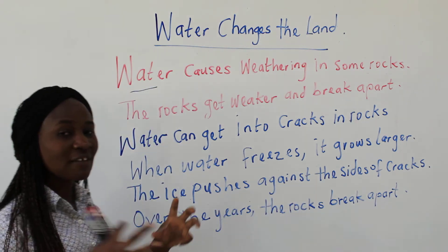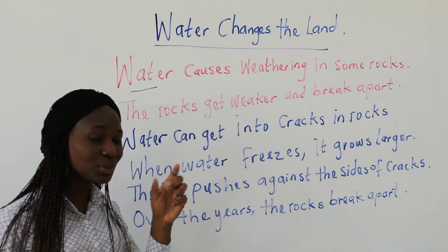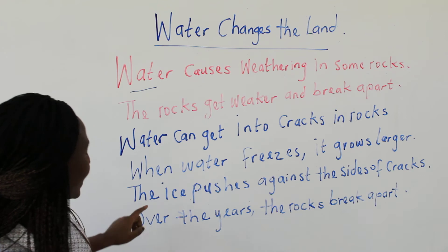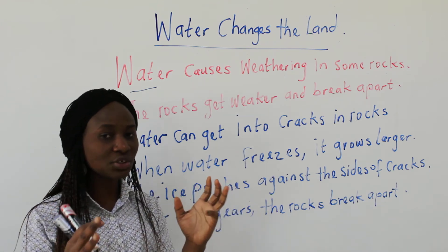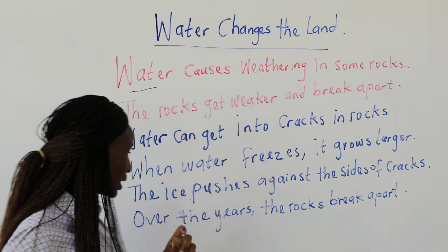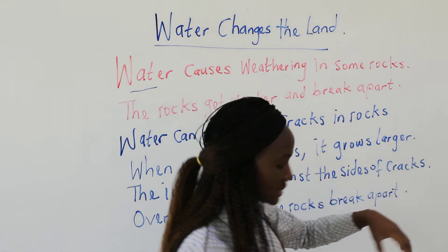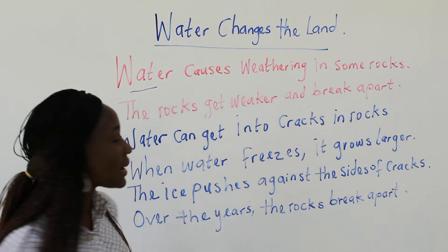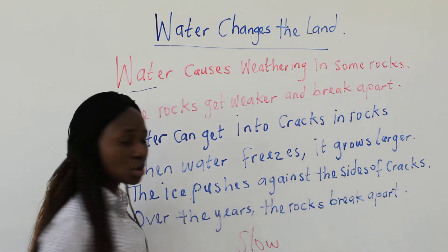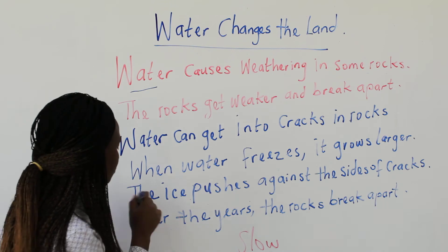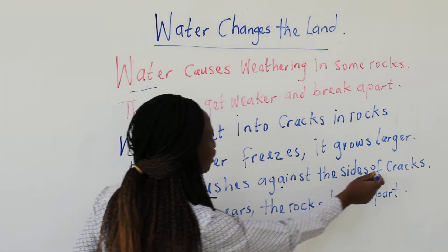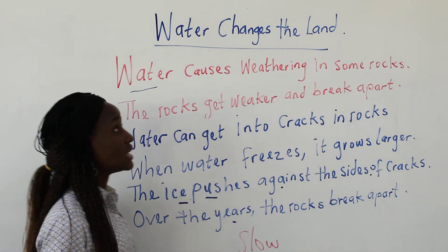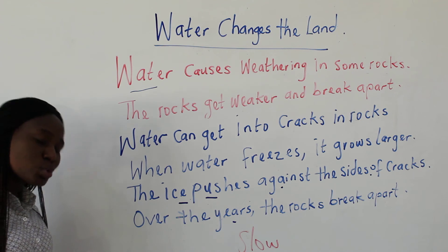The ice pushes against the sides of cracks. Remember glaciers? We talked about glaciers when discussing bodies of water — streams, rivers, oceans. Glaciers are frozen, moving ice. The ice pushes against the sides of the cracks, and over the years the rock breaks apart. Remember, this is a slow change — it takes years.